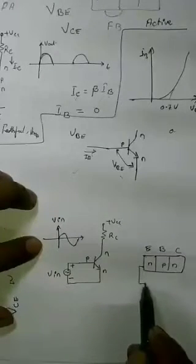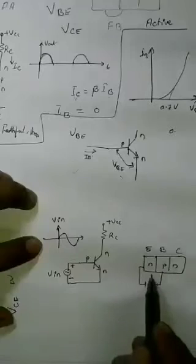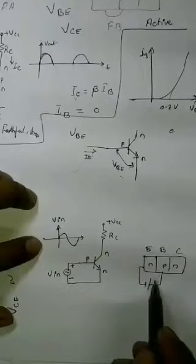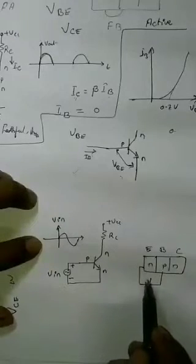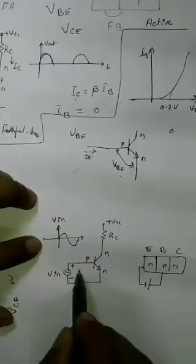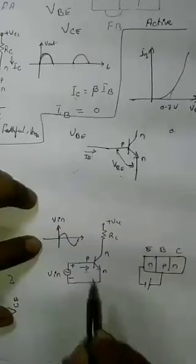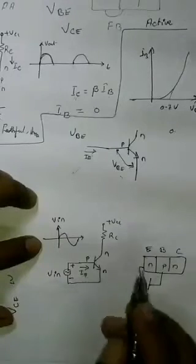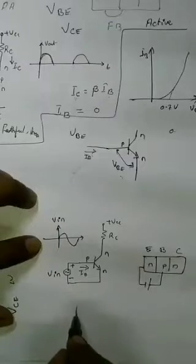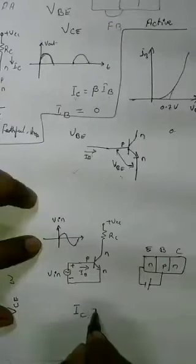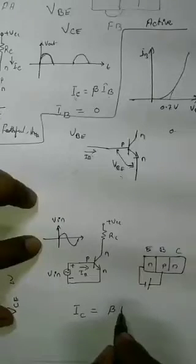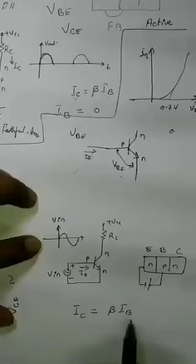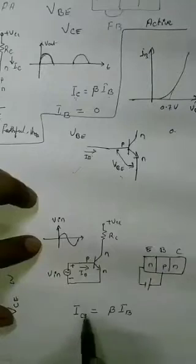During the positive half cycle, the emitter-base junction is forward biased, so conduction occurs. The collector current IC is equal to beta times IB, where beta is the current amplification factor. So IC equals beta × IB.